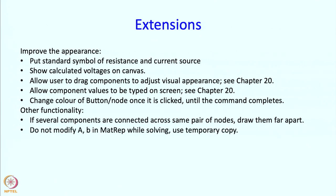Right now our code is modifying the matrices A and B in mathrep directly while solving. Probably the right thing to do is to make a copy and then modify the copy, keeping the values of A and B consistent with their original definition — in particular, A_ii should equal the sum of the conductances leaving node i.